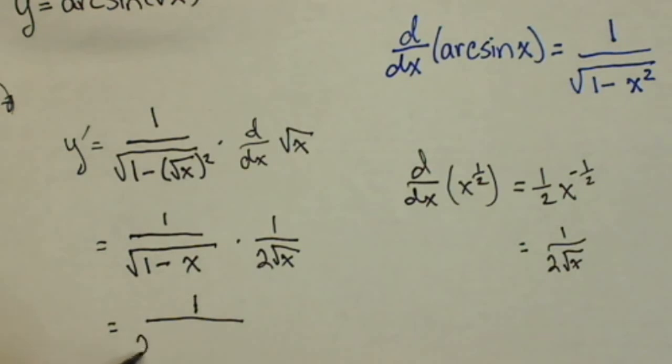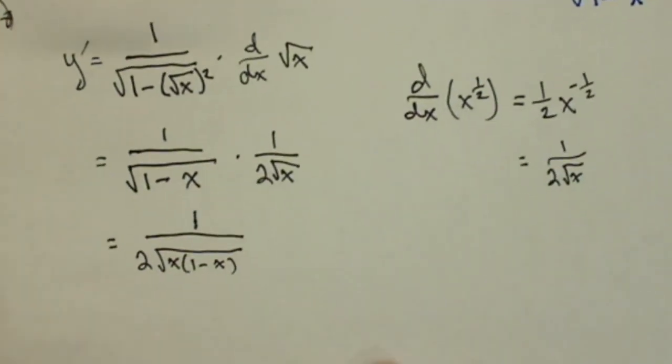1 over 2 times the square root of x times 1 minus x, because we can put those under the same radical. And lastly we could simplify that if we wanted to, x minus x squared. You don't have to go that far, but just wanted to show you what we could do.